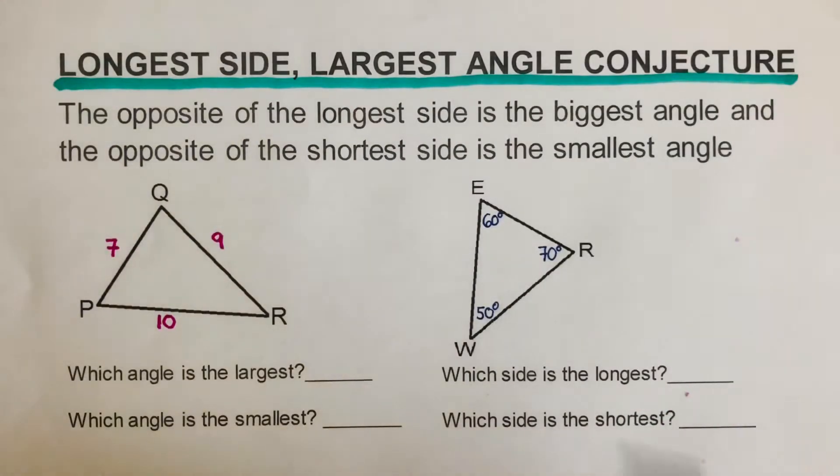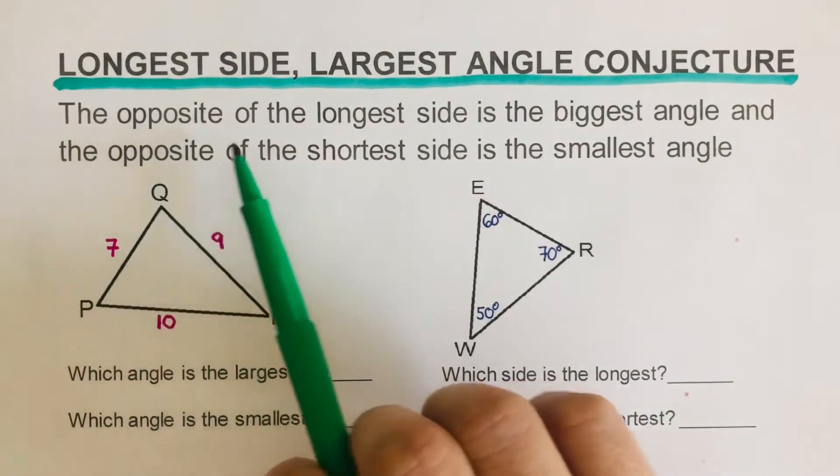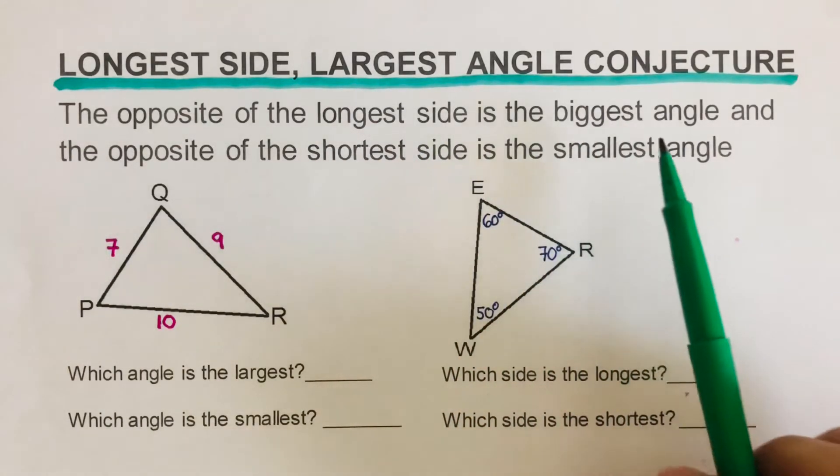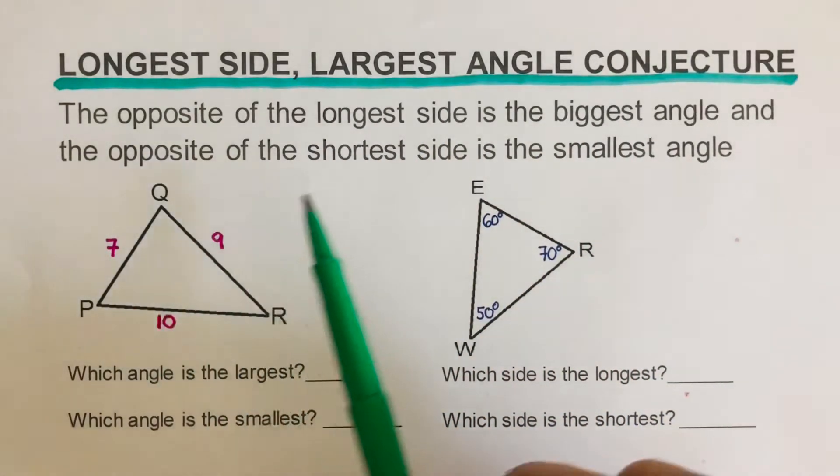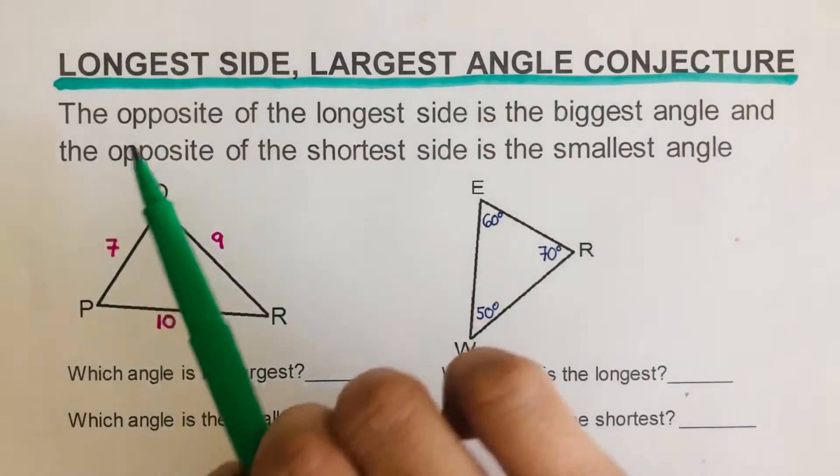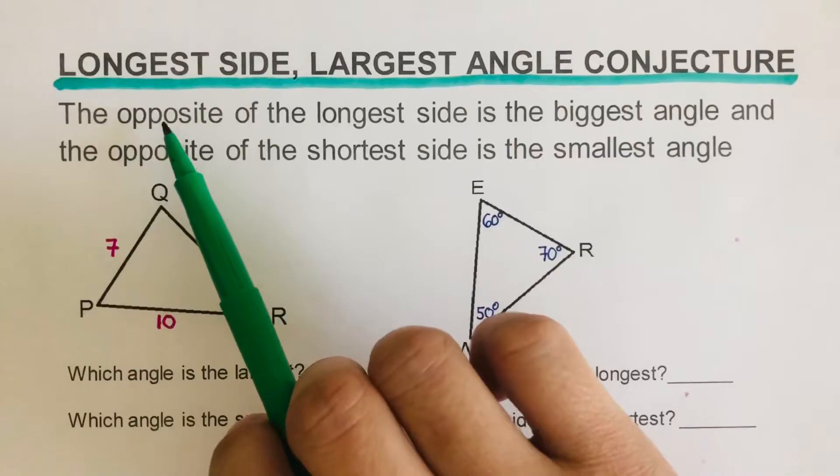This conjecture tells us that the opposite of the longest side is the biggest or the largest angle and the opposite of the shortest side is the smallest angle. Just a reminder about the word opposite here—opposite means across.